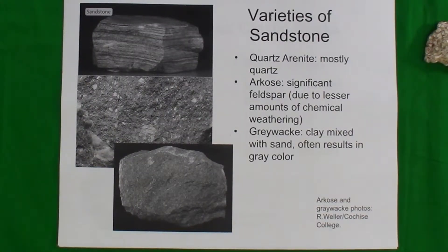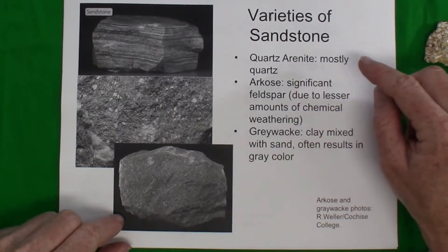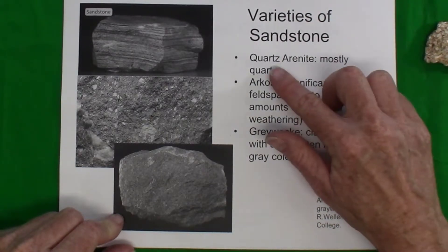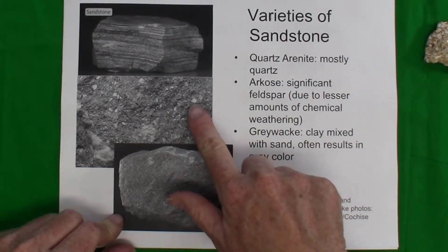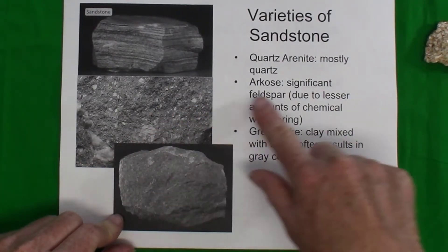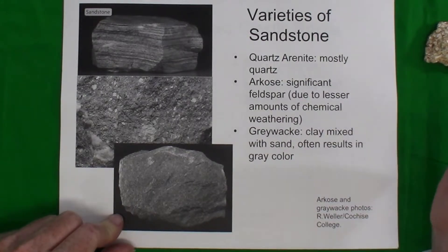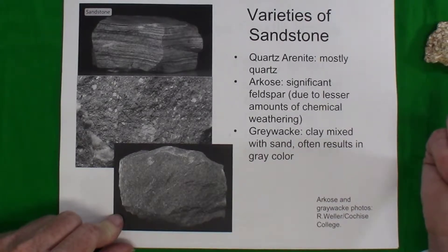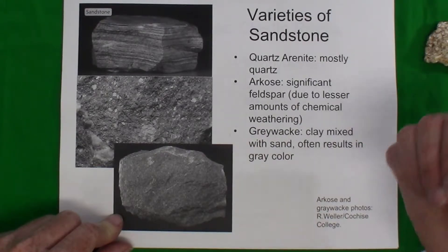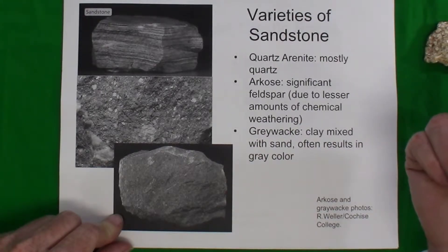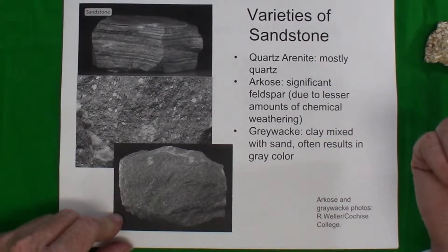There are a variety of sandstones that can be distinguished. If most of the sand grains are made of quartz, we call it a quartz arenite. If there are mostly sand-sized grains but also some larger chunks of feldspar — which typically alters to clay during chemical weathering — then we know it's a sandstone where the sand particles were not subjected to much chemical weathering, usually indicating an arid environment.